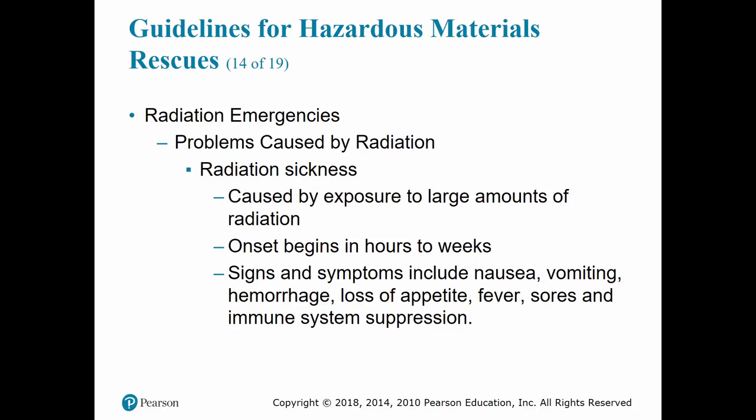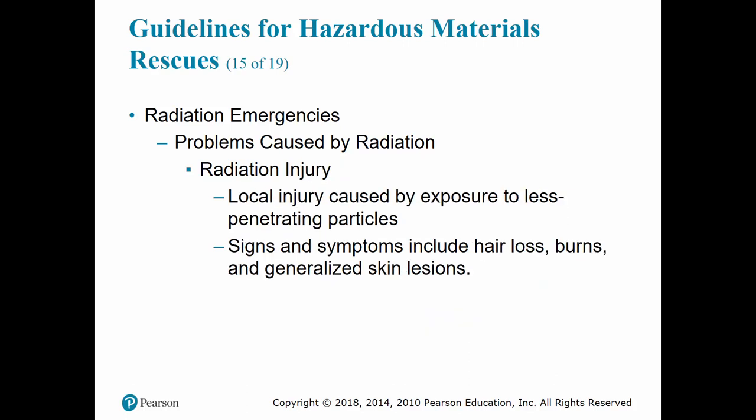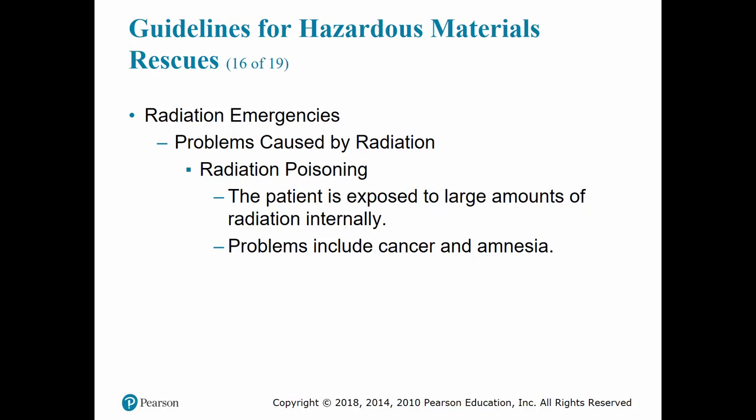Signs and symptoms of radiation exposure include nausea, vomiting, hemorrhaging, loss of appetite, fever, sores, and immune system suppression. A victim of a radiation accident is not contagious or infectious and generally will not endanger a rescuer, unless the patient still has radiation particles on their skin or clothing. Signs and symptoms of radiation injury include hair loss, burns, and generalized skin lesions. Radiation poisoning occurs when the patient has been exposed to dangerous amounts of internal radiation, resulting in serious diseases including cancer and anemia.